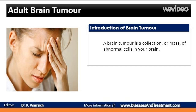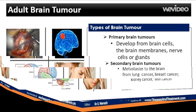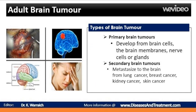Brain tumors are categorized as primary or secondary. A primary brain tumor originates in your brain, and many primary brain tumors are benign. A secondary brain tumor, also known as a metastatic brain tumor, occurs when cancer cells spread to your brain from another organ, such as your lung or breast. Primary brain tumors can develop from your brain cells, the brain membranes, nerve cells, or glands.